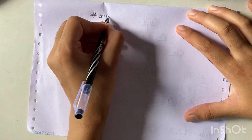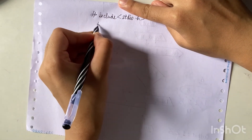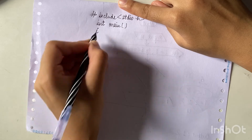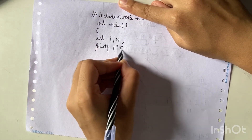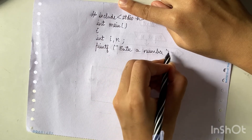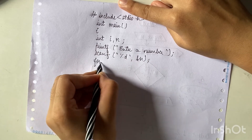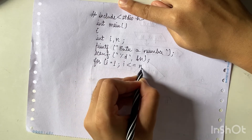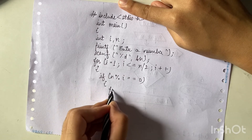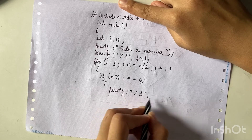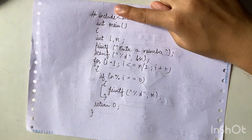Now let us start writing the code — we apply the same logic just in the form of code. You can practice by pausing the video, writing the code yourself, then playing it back to check. We give the command to enter a number, scan it using %d and the address of n. Then the same for loop and if condition — if it is true we print i, and if false we return 0.